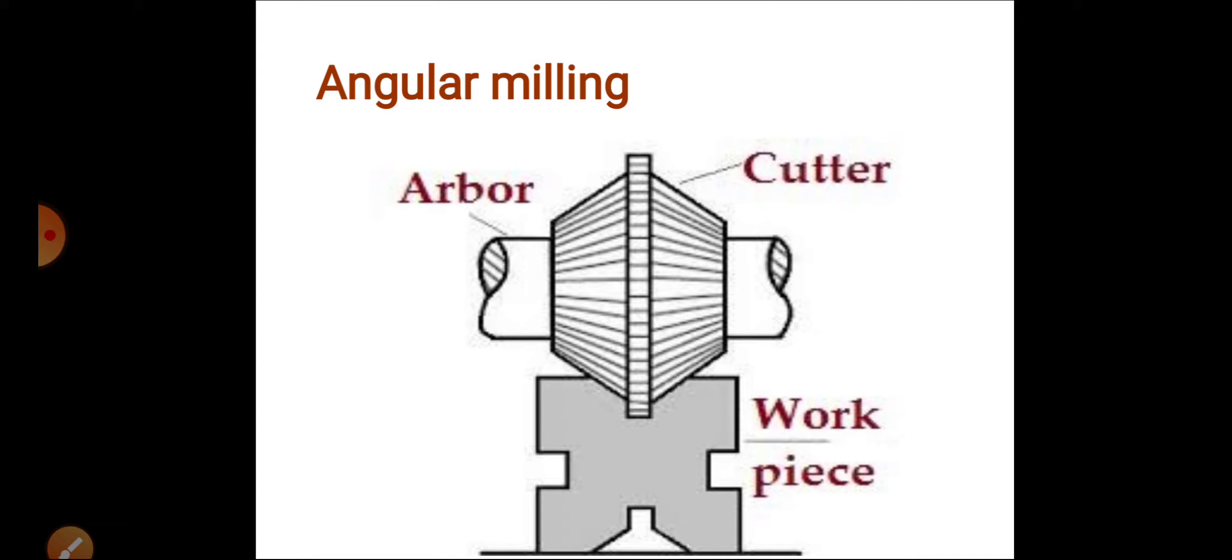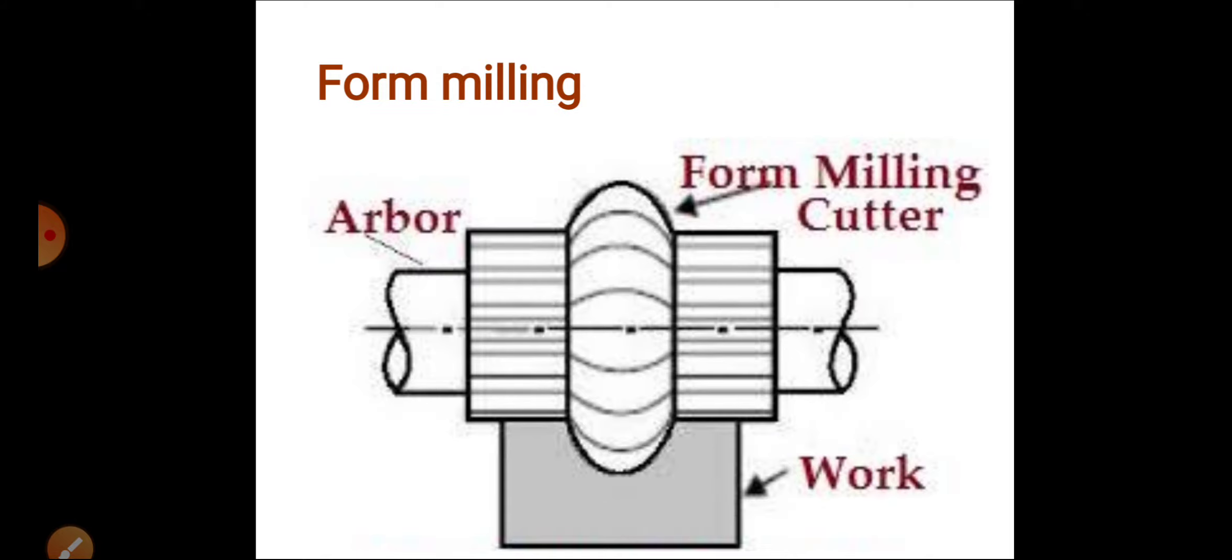You can see the construction of a V-block done with the help of angular milling. Next is form milling. Form milling is used to make irregular shapes or profiles on the top surface of the work piece using a convex type milling cutter.